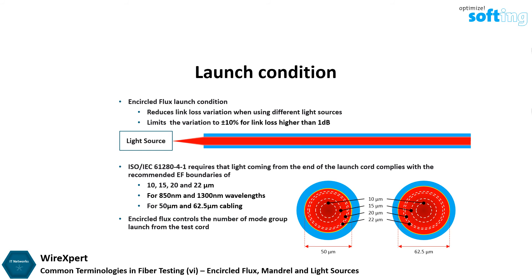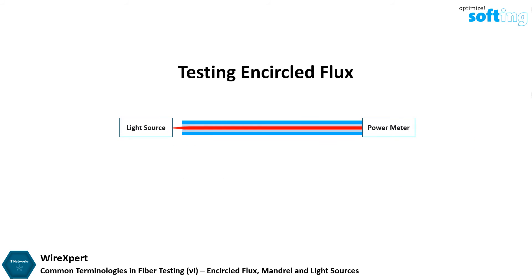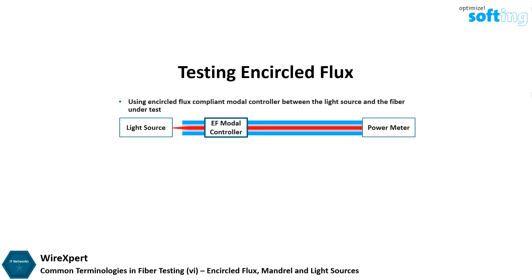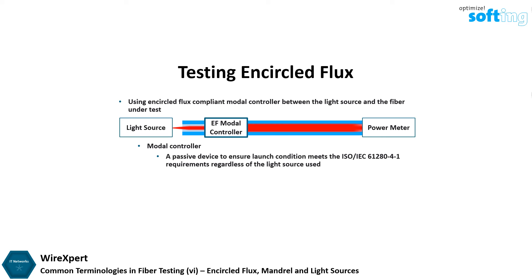Encircled flux controls the number of mode groups launched from the test cord. Testing for encircled flux compliance can be done by using an EF compliant modal controller between the light source and the fiber under test. The EF modal controller is a passive device that ensures launch conditions meet the ISO IEC 61280-4-1 requirements regardless of the light source used. Some modal controllers may also include a launch cord for direct connection to the fiber under test during measurements.